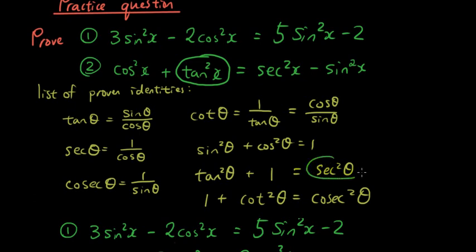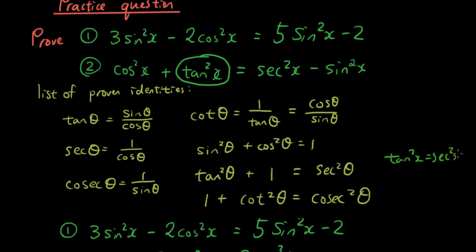I have sec squared x equals tan squared theta plus 1. So I can rearrange this to make it tan squared x equals sec squared x minus 1. And then if I substitute this over here, I've turned this into something that exists on the right hand side: sec squared x.